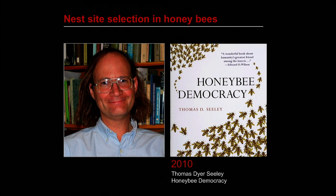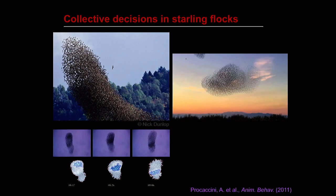So there is a form of competition of information at the collective level, and the information that succeeds in growing faster than the others will determine the final choice of the swarm. This story has been nicely described by Tom Seeley in his book Honeybee Democracy. In that particular case, the entire decision-making process requires some time — the dance activity of the scouts can last several days. But in many other situations, animal groups must take a decision on a shorter time scale, for instance when a predator is detected in the environment.